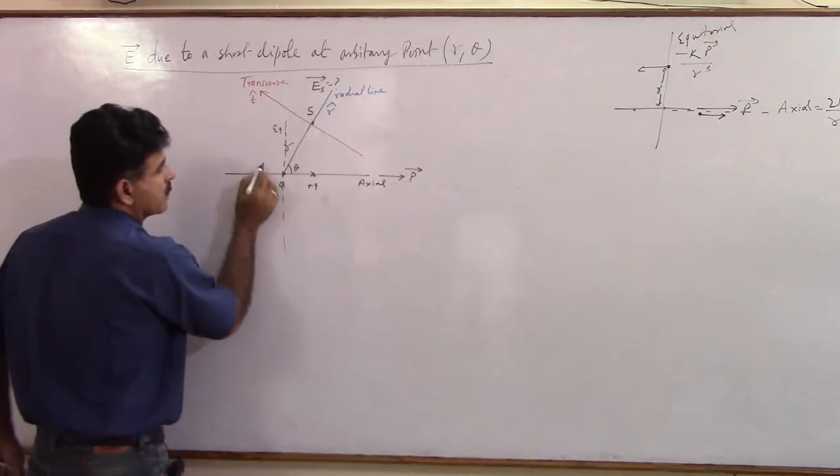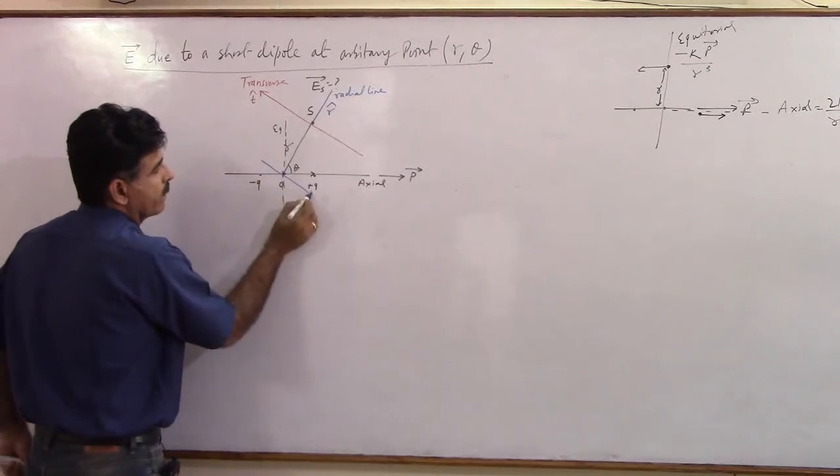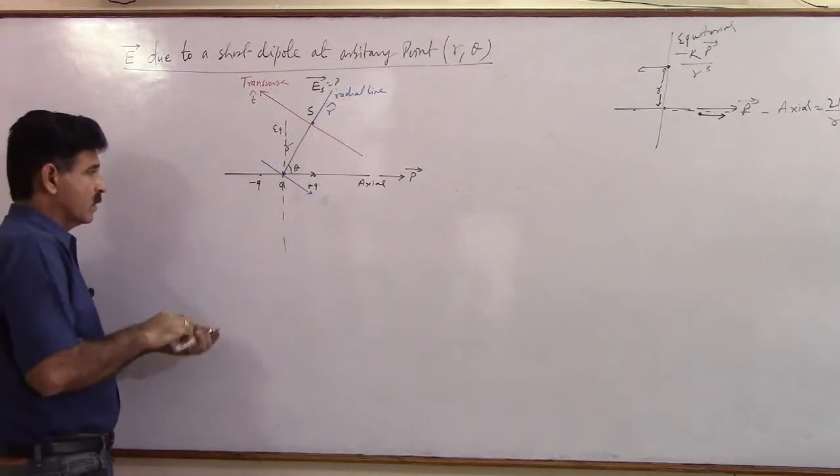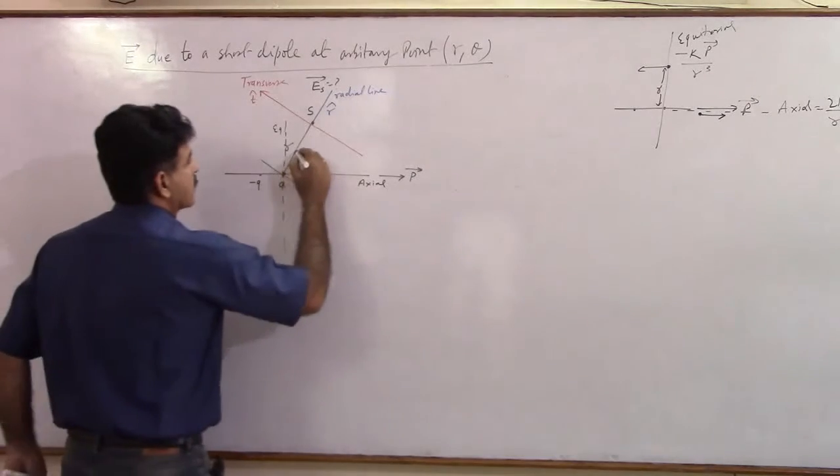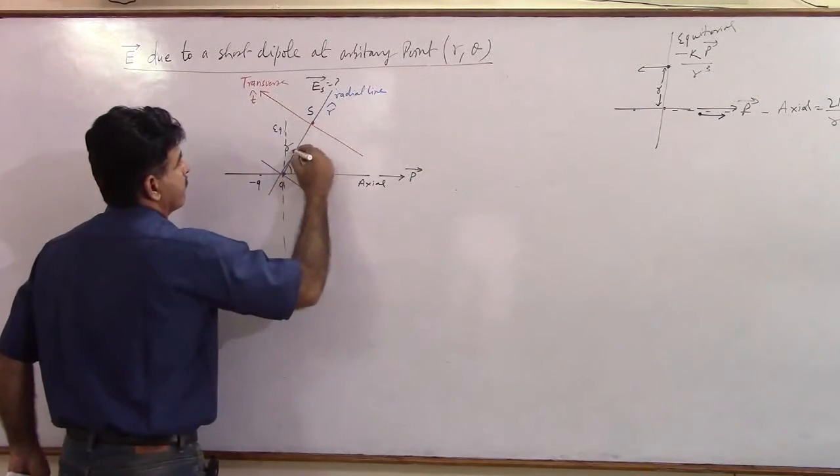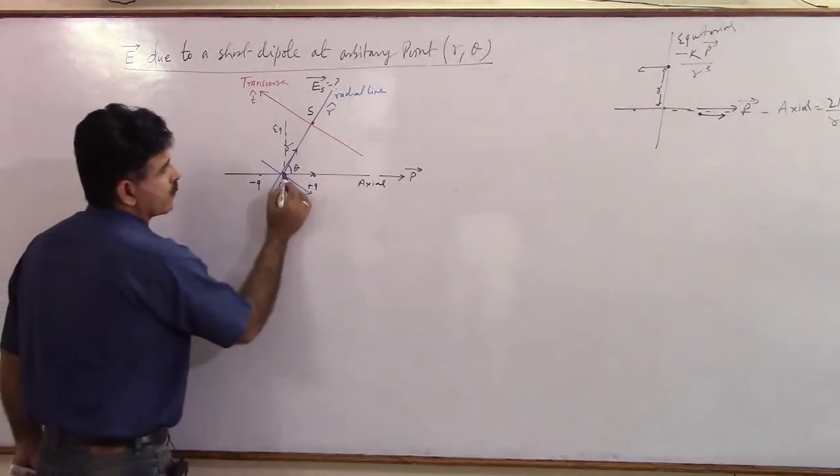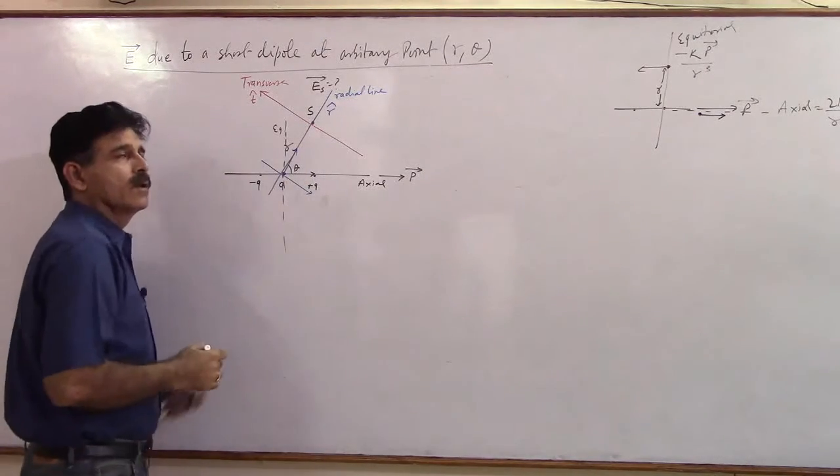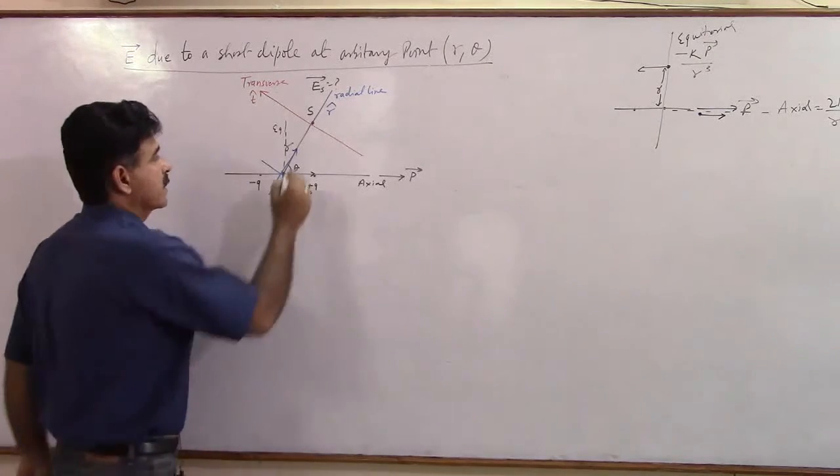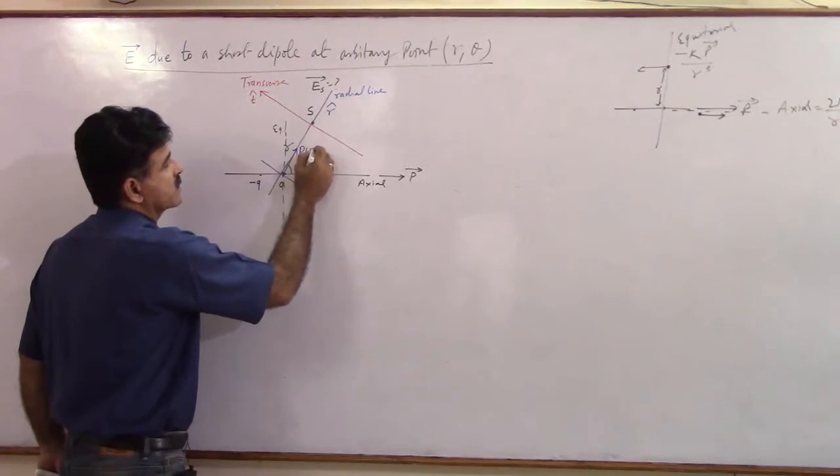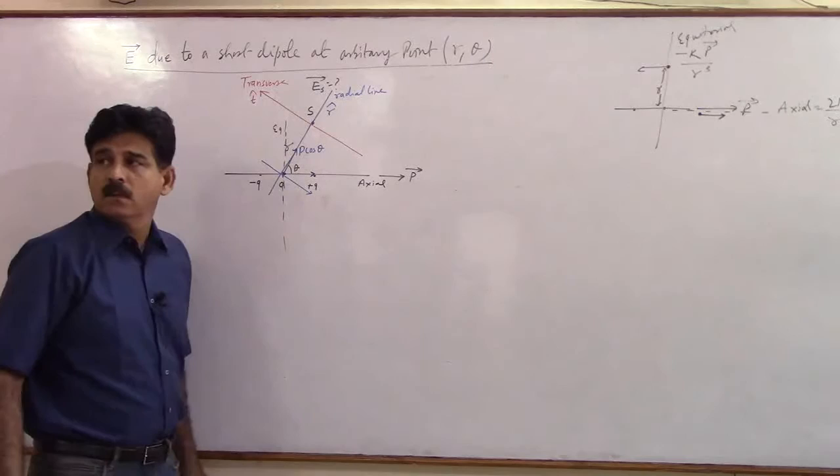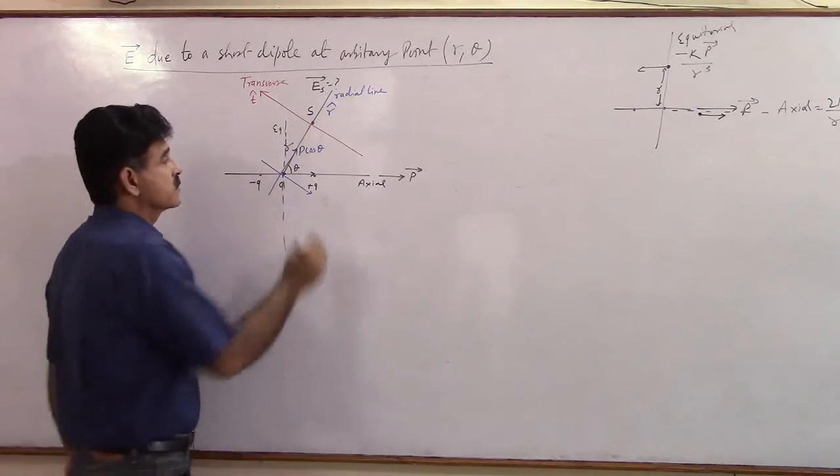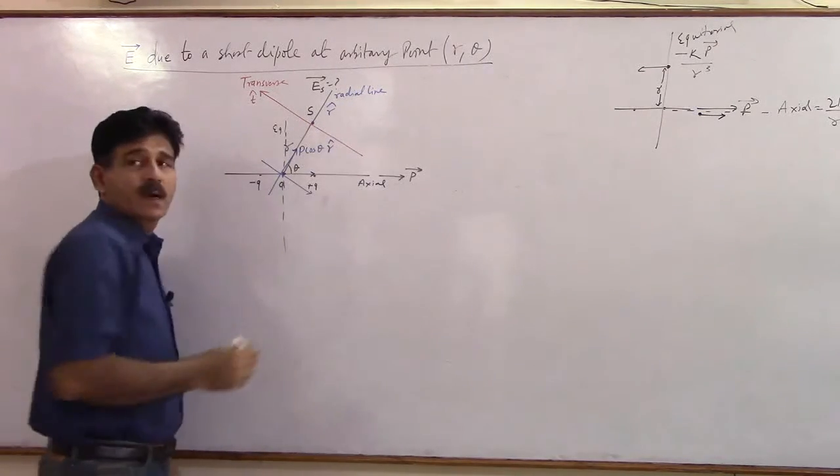I want to break this vector P along two directions. One component along here and the second component along here. So if this is your P vector, I take the component along this line. What do I get? P cos theta. In which direction? Radial direction. So this will be P cos theta R cap.